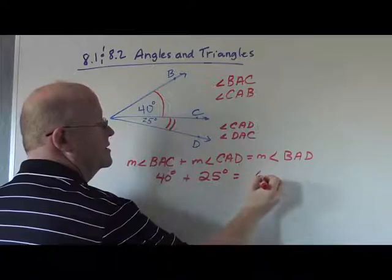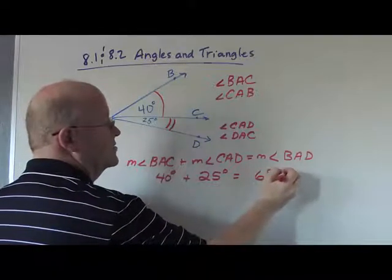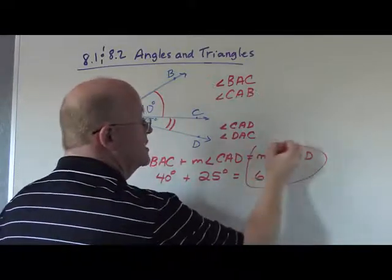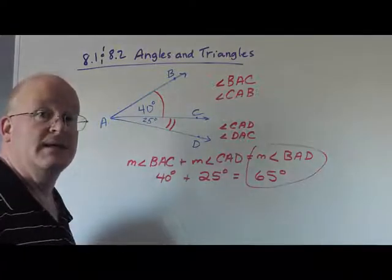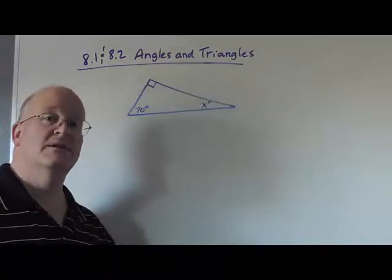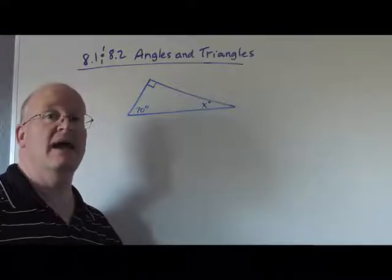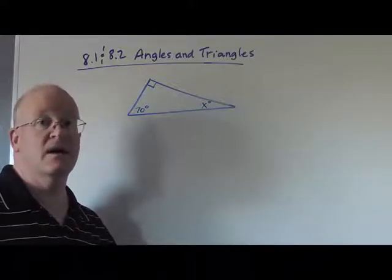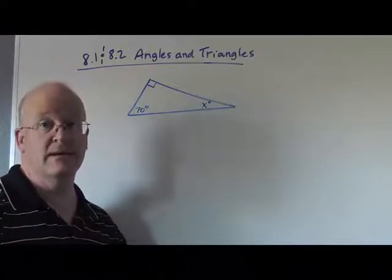And together that will become 65 degrees which will be the measure of angle BAD. A very important theorem is that the sum of the angle measures in any triangle is 180 degrees.